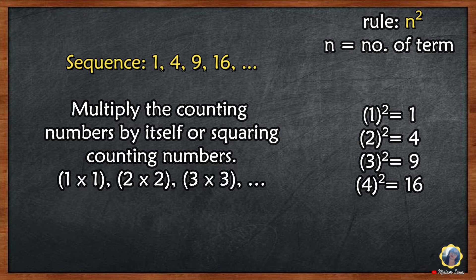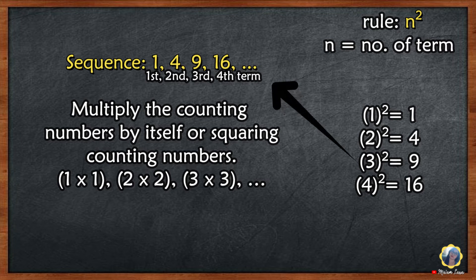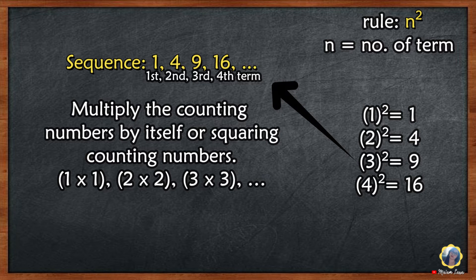Let's change the value of n into 1, 2, 3, and 4 — the first, second, third, and fourth term. 1 squared is 1, 2 squared is 4, 3 squared is 9, 4 squared is 16.